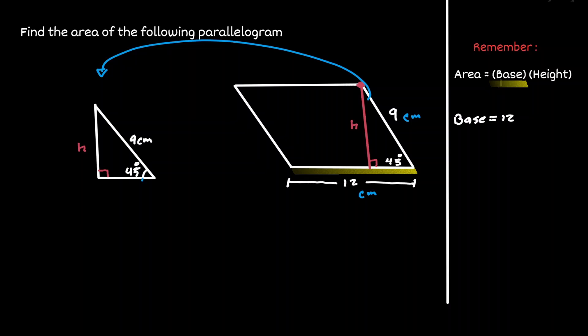If we let 45 be our reference angle and start labeling our triangle, then the height will be the opposite, the value of 9 centimeters will be our hypotenuse, and we'll have our adjacent right here.